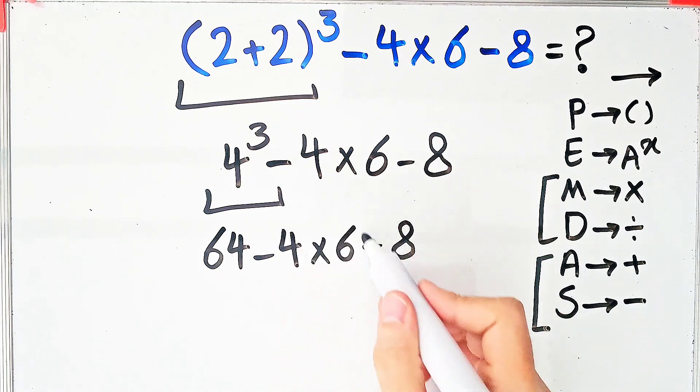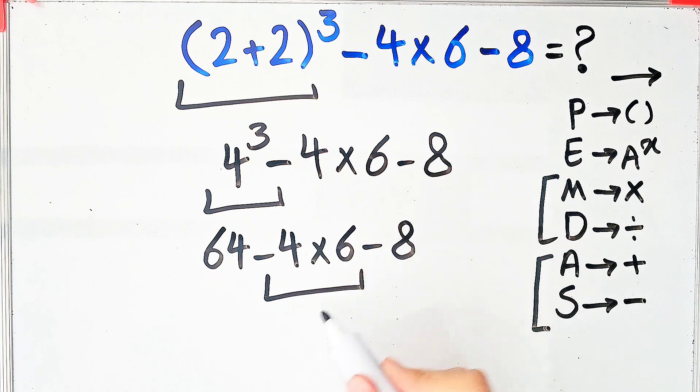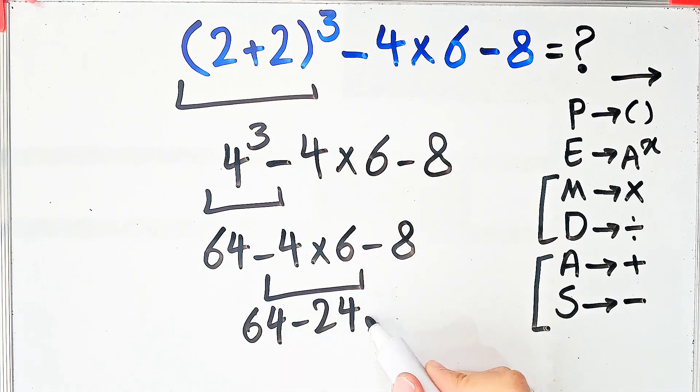Now we do this multiplication. Negative 4 times 6 equals negative 24. 64 minus 24 minus 8.